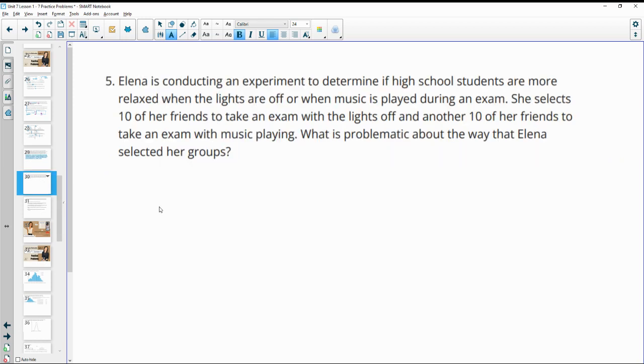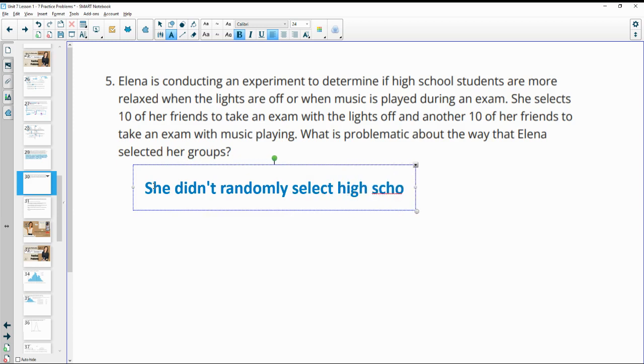Number five. Elena is conducting an experiment to determine if high school students are more relaxed when the lights are off or when music is playing during an exam. She selects 10 of her friends to take the exam with the lights off and 10 of her friends to take the exam with music playing. What's problematic about the way that Elena selected her group. So she didn't randomly select high school students. Since she only selected her friends.